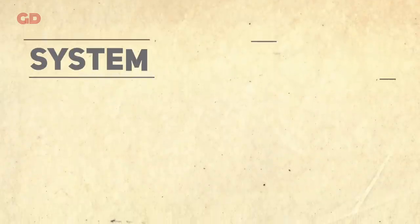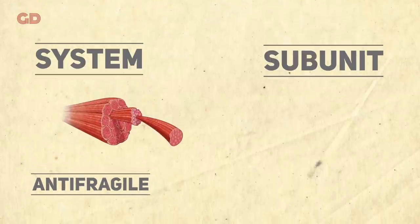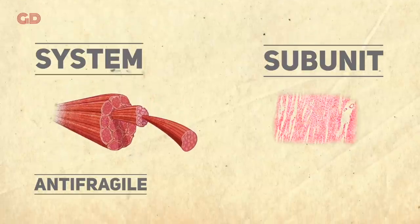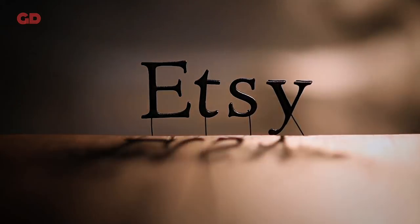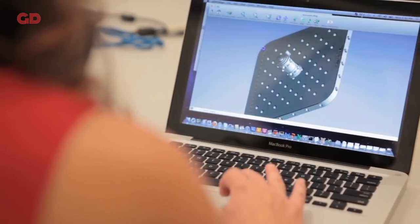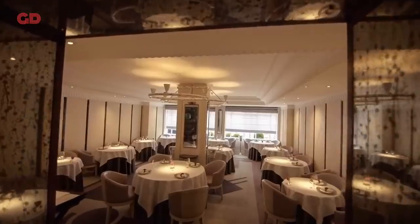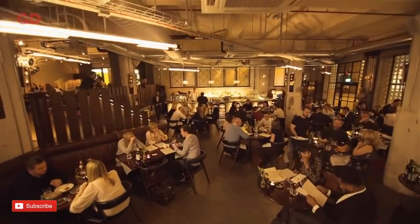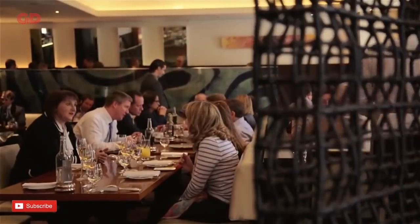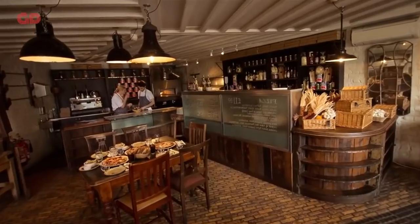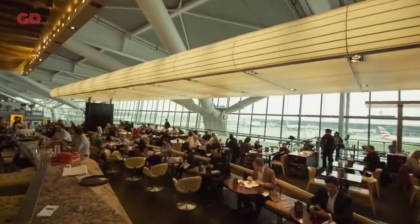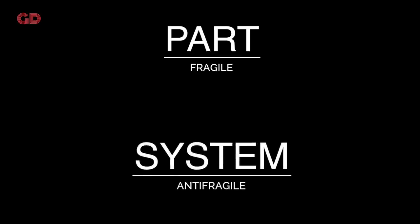Now it's important to distinguish between a system and the sub-units of that system. Our muscular system is anti-fragile and increases through stress, while the sub-unit of that system, the cells, are fragile and die under stress. The same thing applies to our economies. The fragility of every start-up is necessary for the economy to be anti-fragile. Restaurants are fragile as they compete with each other, but the collective industry is anti-fragile. Imagine if each individual restaurant was strong and stable, then the industry as a whole would stagnate and weaken. So maybe it's important for the part to be fragile in order for the system to be anti-fragile.